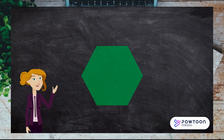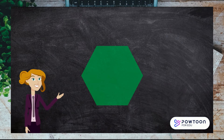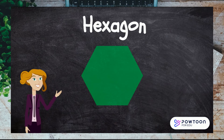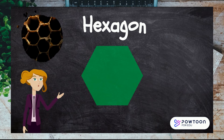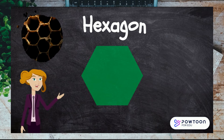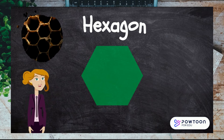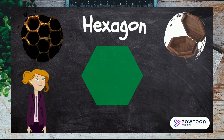The next shape has six sides and is called a hexagon. Honeycomb is actually lots of hexagons that fit together perfectly, made by bees. How cool is that? Have you seen any other hexagons anywhere?